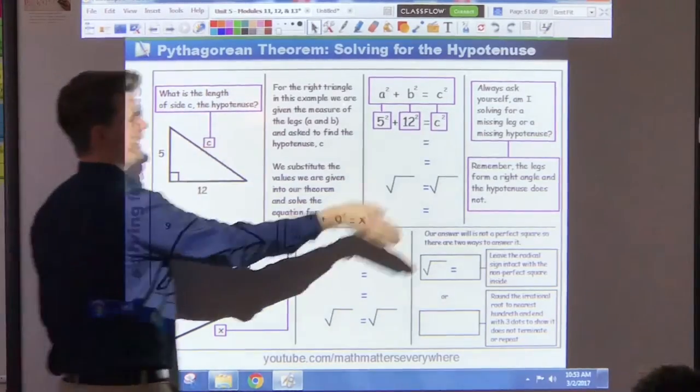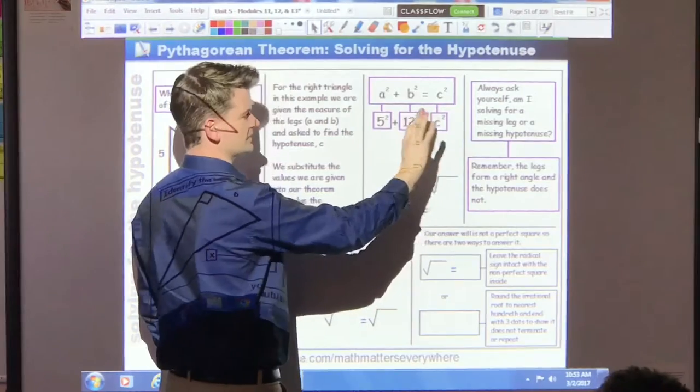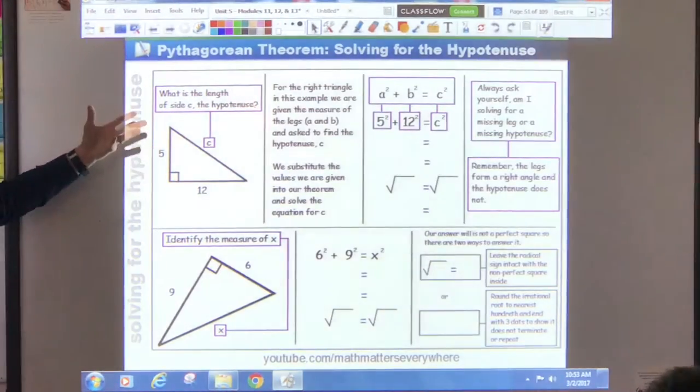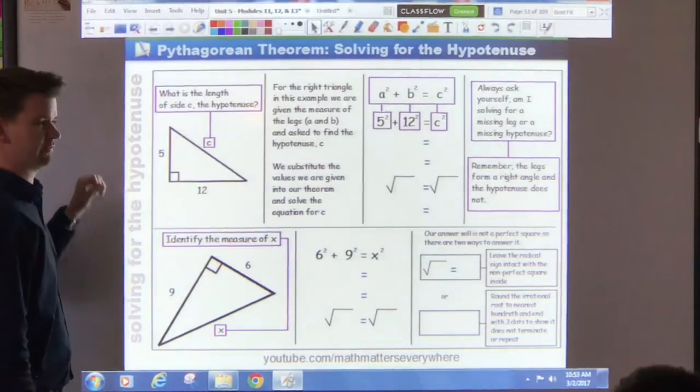Remember, hypotenuse is C. Hypotenuse is always on the right side of the equation all by itself. And we look at what we do know. We know that this leg measures five units. We don't know what it is, inches or centimeters, so we say units.